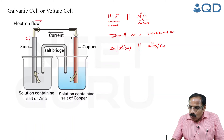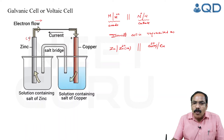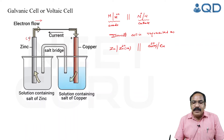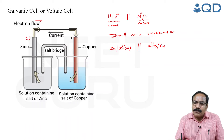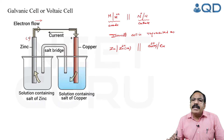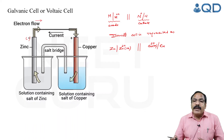Remember: the polarity of the anode is negative and the cathode is positive. The direction of flow of electrons is from anode to cathode. The conventional flow of current is from cathode to anode. This is a spontaneous redox reaction.